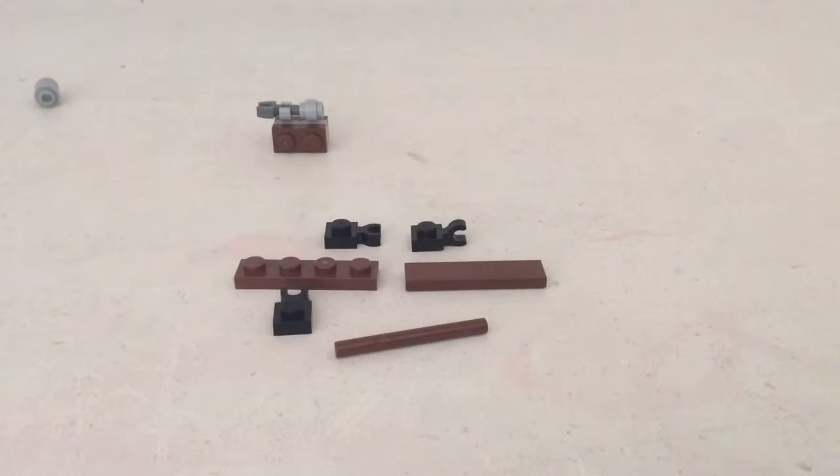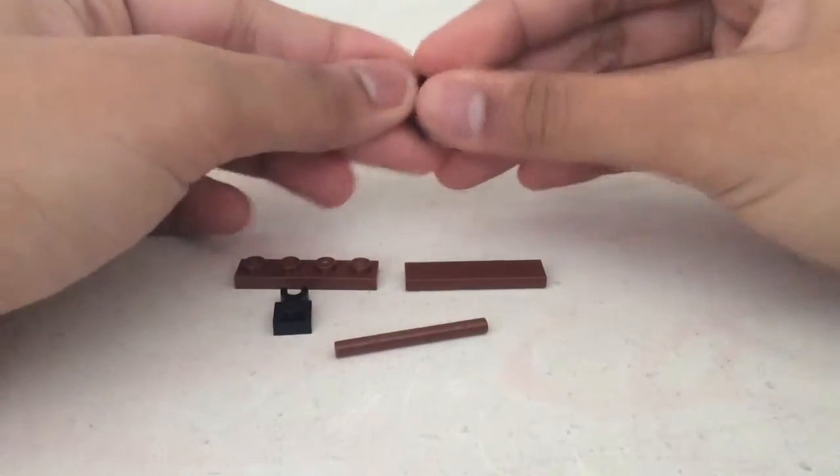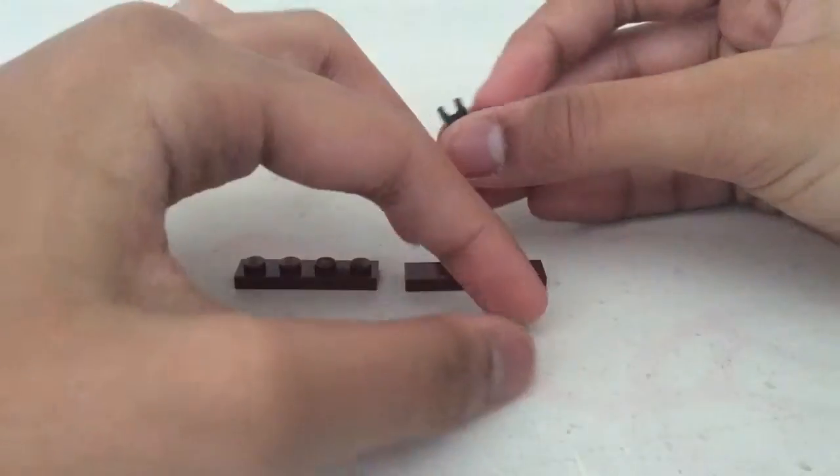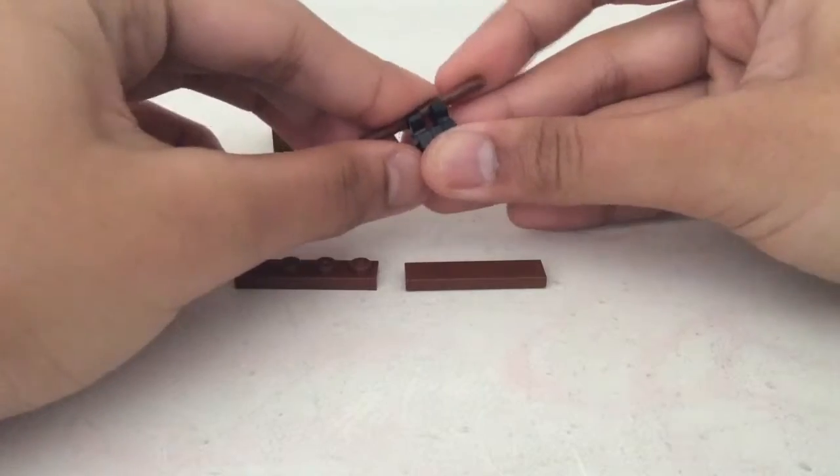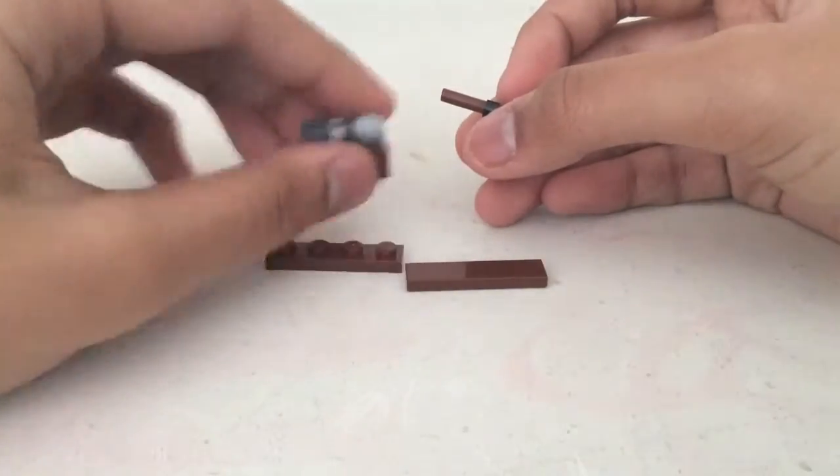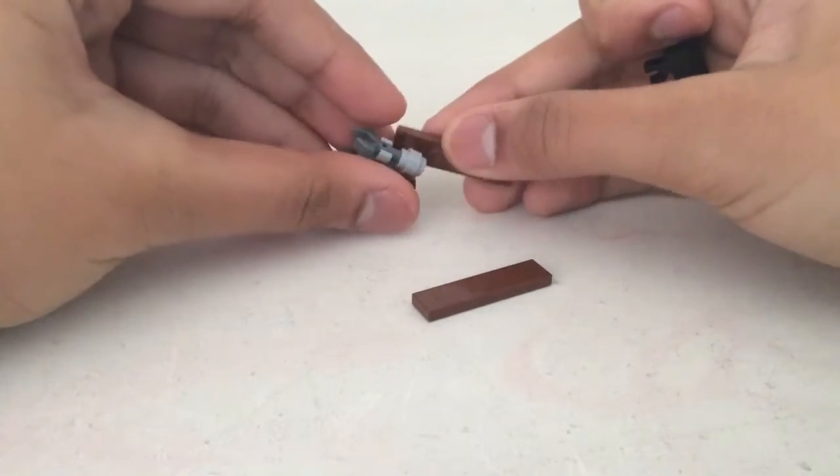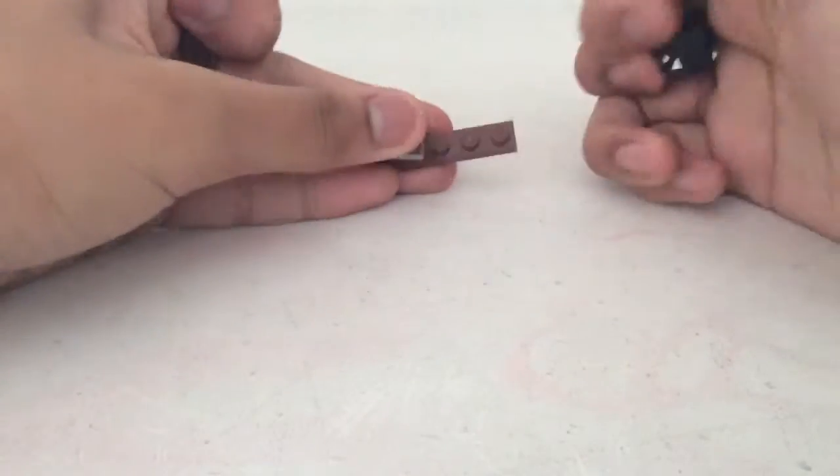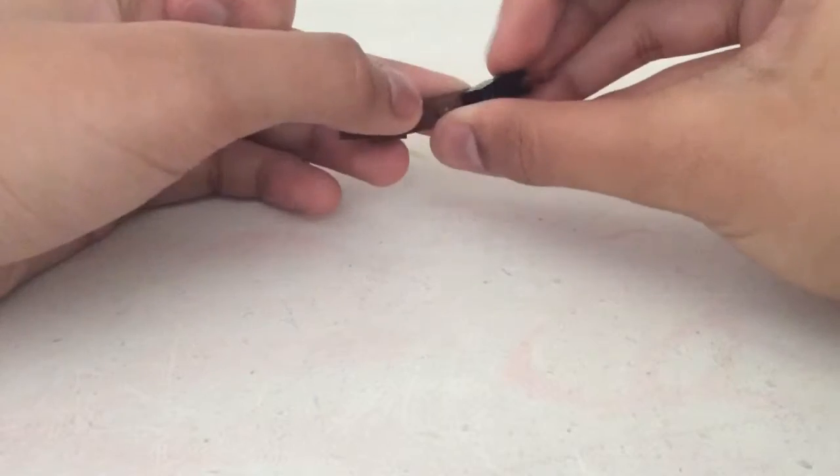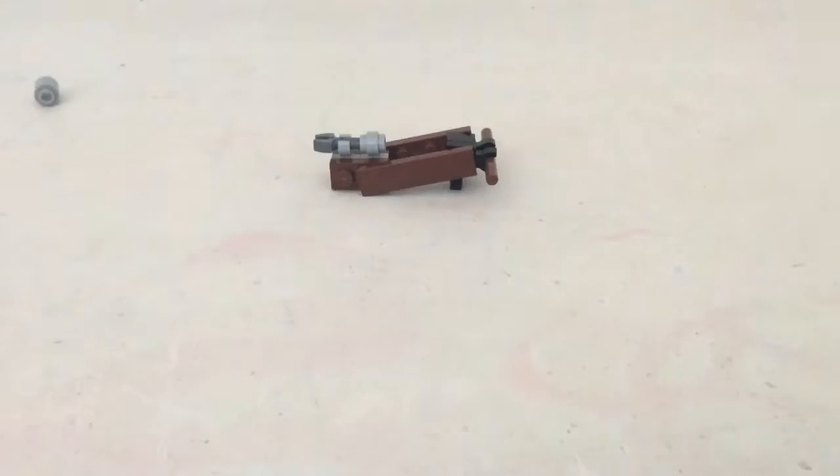Here's the second part for the cannon. We start with this piece, and connect this part here, put this thick piece here, and you need to use this piece. Connect this piece here, and connect this brick here, and there you go.